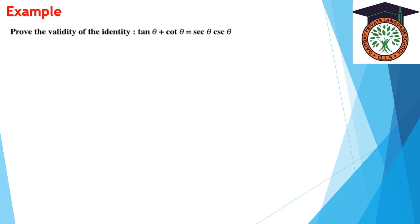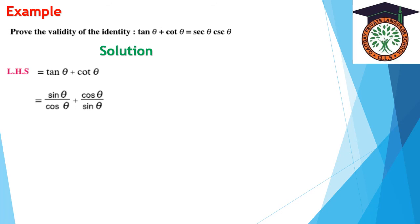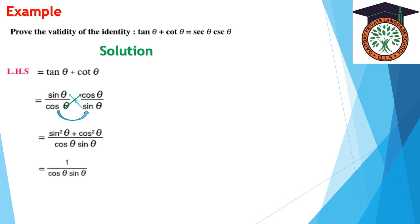Example: Prove the identity tan z + cot z = sec z · csc z. Writing tan z = sin z/cos z and cot z = cos z/sin z, combining over the common denominator cos z · sin z gives (sin²z + cos²z)/(cos z · sin z) = 1/(cos z · sin z) = sec z · csc z, which equals the right-hand side.